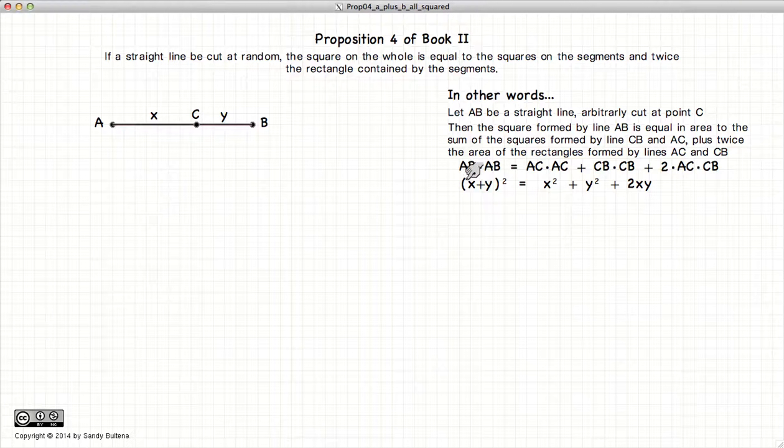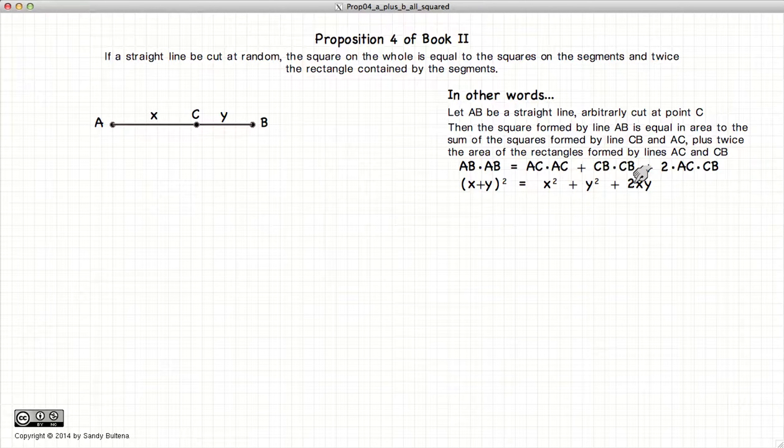In other words, (x+y)² equals x² + y² + 2xy. We will demonstrate this using geometry.